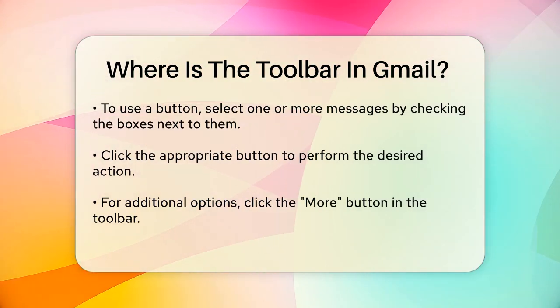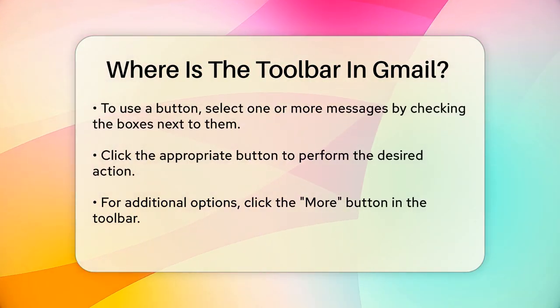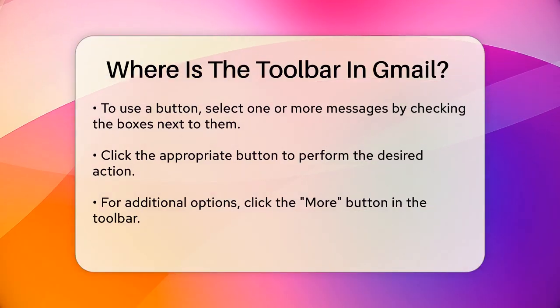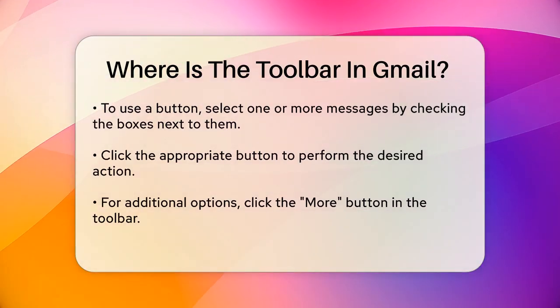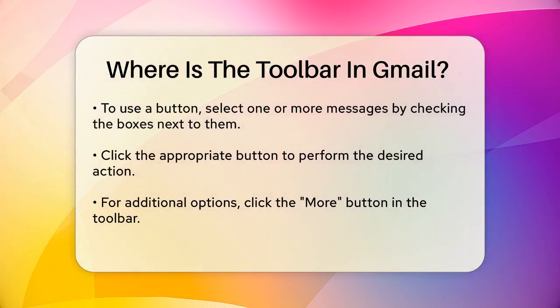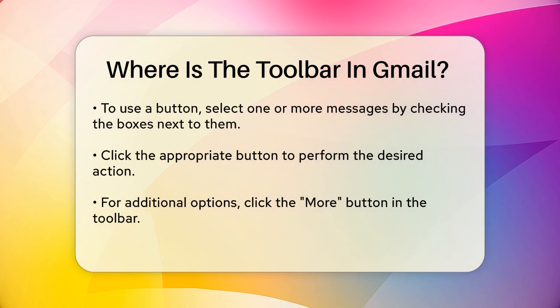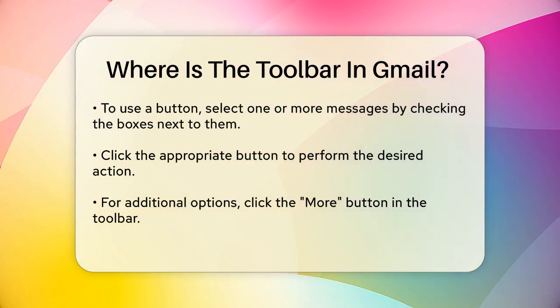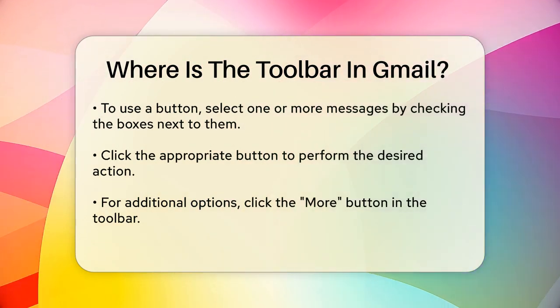To use these buttons, simply select one or more messages by checking the boxes next to them. Then, click on the appropriate button at the top. For instance, if you want to archive a message, click the Archive button.